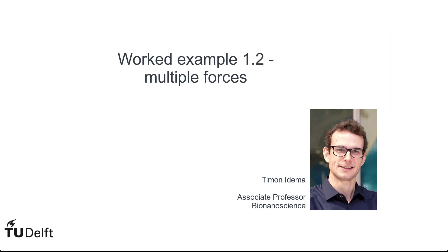In this worked example, we'll revisit the example from the lecture, where we looked at the forces on a block on a slanted surface. Here we're going to take it one step further and ask: under what angle can I tilt the table such that a book lying on it just does not slide off? So what we want to know is how far can you tilt the table before the book starts to slide?